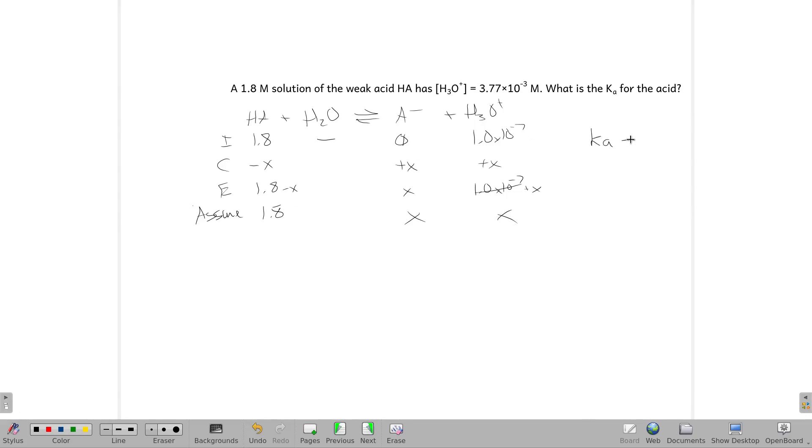Our basic equation for weak acid looks something like this. Now we're just plugging stuff in. Ka equals X and X all over 1.8.